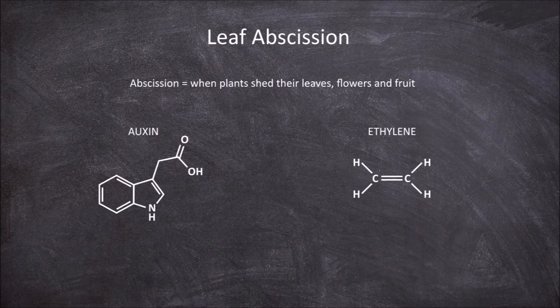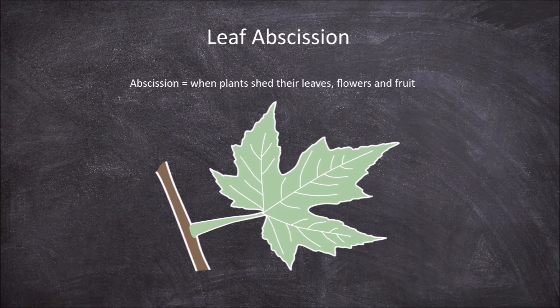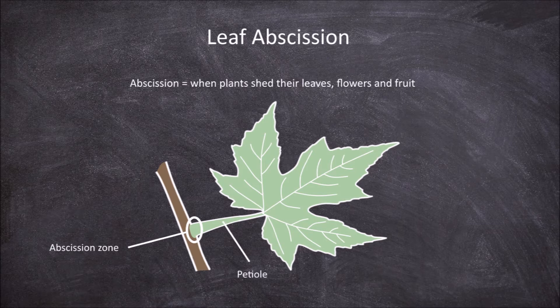Auxin inhibits leaf abscission, whilst ethylene promotes leaf abscission. Leaf abscission occurs in an area known as the abscission zone, which is an area of cells located near the base of the petiole.